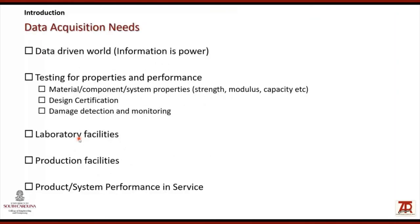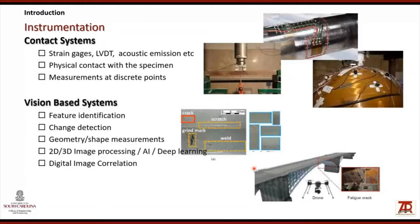We live in a data-driven world where information is power, and data collection through testing for properties and performance is critical in product development at a material, component, or system level, and in design certification, damage detection, and monitoring once the product is in service. Such testing can take place in laboratory facilities, production facilities, or even in the field. I grouped the instrumentation used in such activities into two broad areas: contact systems and vision-based systems.